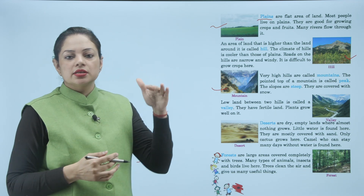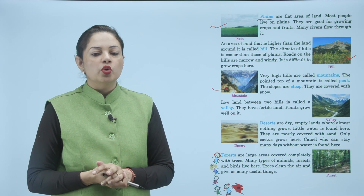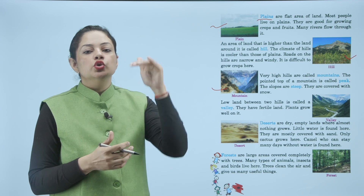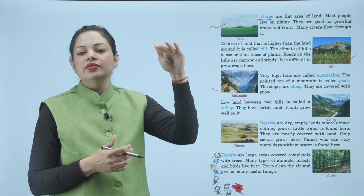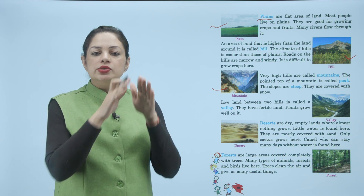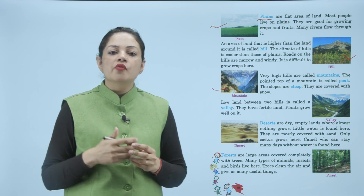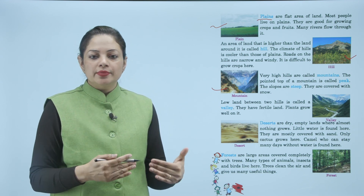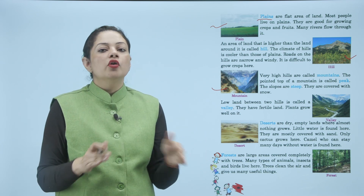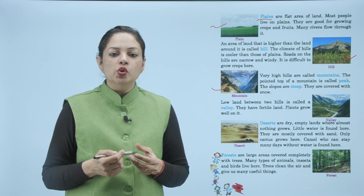Very high hills are called mountains. बहुत बड़ी hills को mountains कहते हैं। The pointed top of a mountain is called a peak, और जो mountains की pointed चोटी होती है उसको peak कहते हैं। The slopes are steep — जो slopes हैं उनको steep कहते हैं। They are covered with snow — mountains के steeps बर्फ के साथ cover हो जाते हैं।